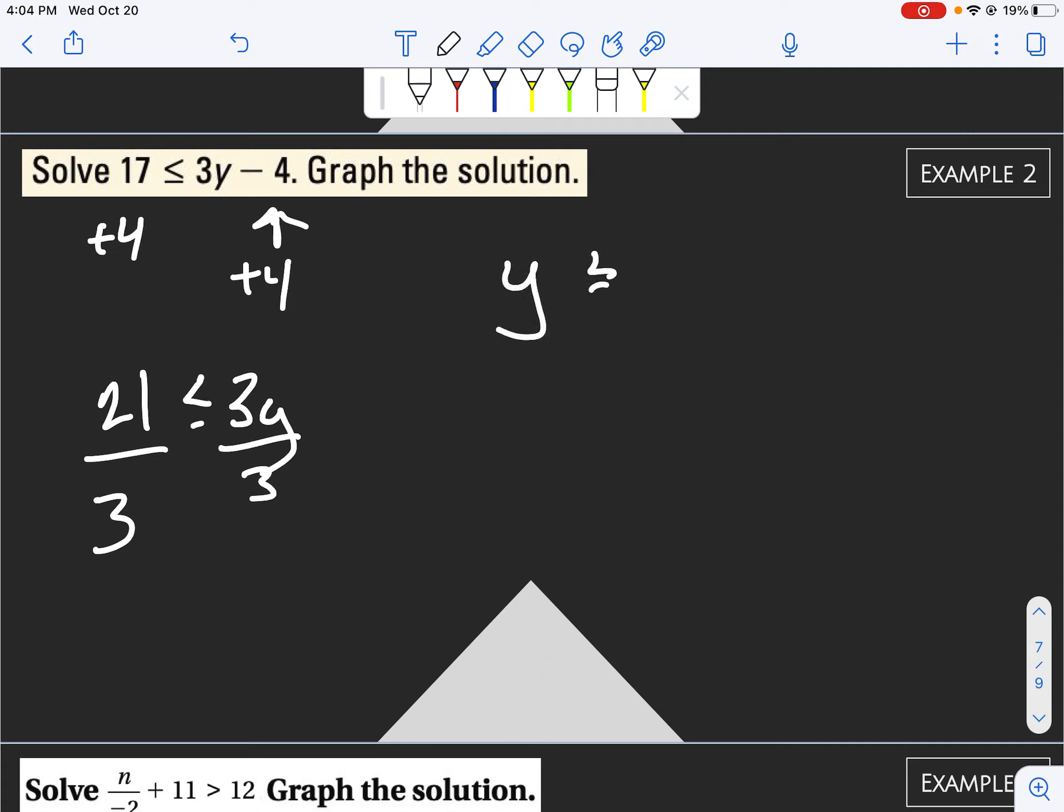Now we divide both sides. Y would be less than or equal to... Whoops. We would have 7 is less than or equal to y. Now notice that I did not switch the sign because we didn't divide or multiply by a negative number. So our sign stays the same.